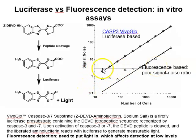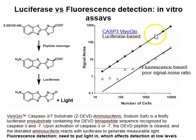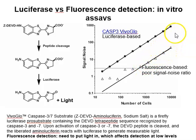Comparing luciferase-based and fluorescence-based systems for detecting caspase 3-expressing cells shows a clear difference in signal-to-noise ratio. With a signal-to-noise threshold of 3, a luciferase-based system can detect as few as 30–50 cells above that threshold in a straight line. In contrast, a fluorescence-based system requires many more cells — approximately 1,000 cells upward — before reaching an acceptable signal-to-noise ratio. This is because the fluorescence system requires light input, generating higher background. The luciferase system operates in a dark box with no light input, giving much better sensitivity.